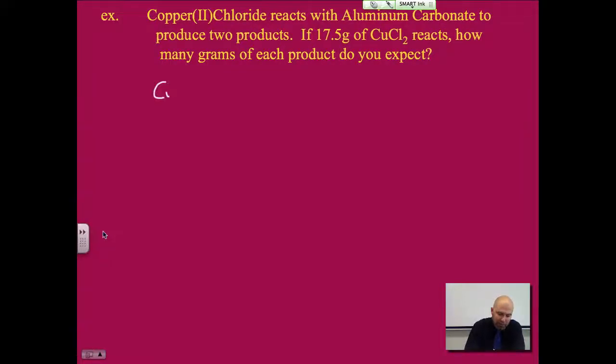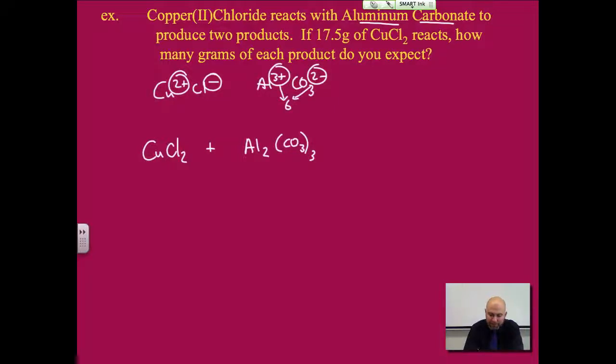So Copper(II)Chloride, well 2 means it has a 2 plus charge. Chlorine is a 1 minus, so it's CuCl2 reacts with Aluminum Carbonate. Aluminum is a 3 plus charge. Carbonate is a 2 minus charge. We get a 3 plus, a 2 minus, that's going to be Al2(CO3)3. Because again your least common is 6 and you need to have that many. Now it says to produce two products. I didn't even tell you what the products are,